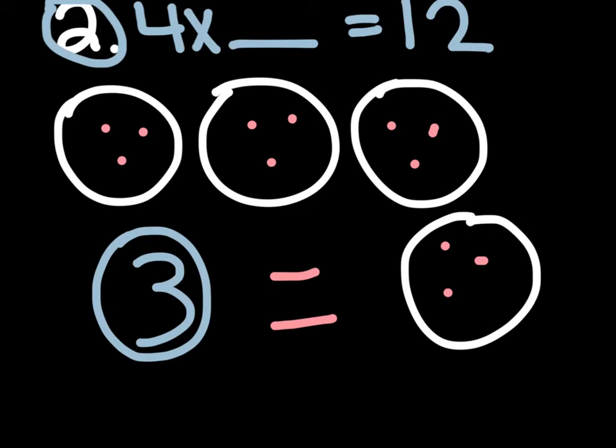4 groups of blank equals 12. Well, I drew my 4 groups, but I don't know how many go in each group. However, I know the product is 12, which means when I add up all of these numbers that are in each group, it's going to equal 12. So I put one dot in each group until I get to 12. And when I did that, I had 3 in each group, which means 4 times 3 equals 12.